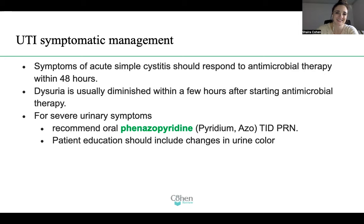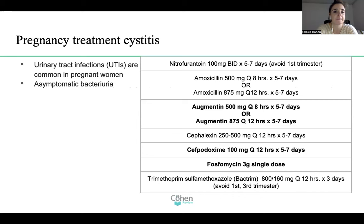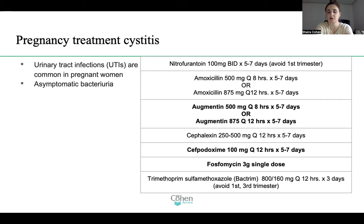As for pregnancy and the treatment of cystitis, UTIs are common in pregnant women because as the baby grows, it puts pressure against the urethra, making the distance progressively shorter — making it easier for E. coli, for example, to reach the bladder. That's also why UTIs are less common in men: it's a much longer distance for the pathogen to travel.